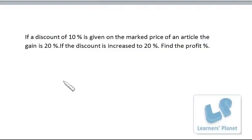Now we see this question: if a discount of 10% is given on the marked price of an article, the gain is 20%. If the discount is increased to 20%, find the profit percent. With these sorts of questions, what generally happens is students start with marked price.